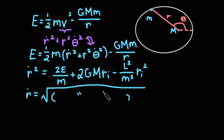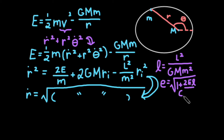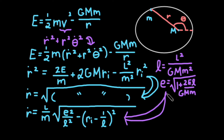We can rearrange our energy equation so that r-dot squared is equal to 2 times E over m plus 2GM times r-inverse minus l squared divided by m squared times r-inverse squared. Let's define two constants: l equal to the angular momentum squared over G times the masses squared, and e equal to the square root of 1 plus 2 times E times l over G times the masses. These constants may look chaotic now, but they will help make our calculations cleaner in the end. r-dot becomes l over m times e squared over l squared minus r-inverse minus 1 over l squared, to the one-half power.